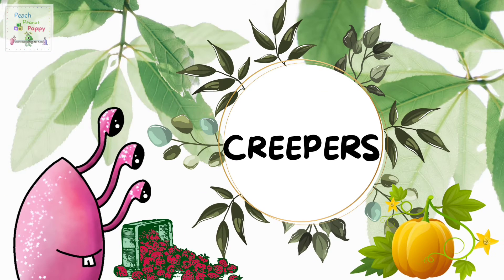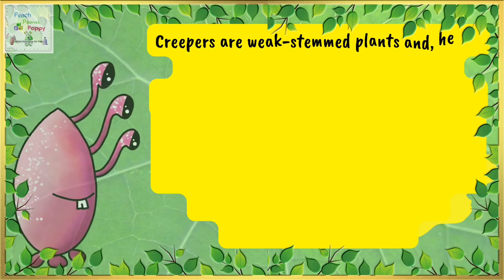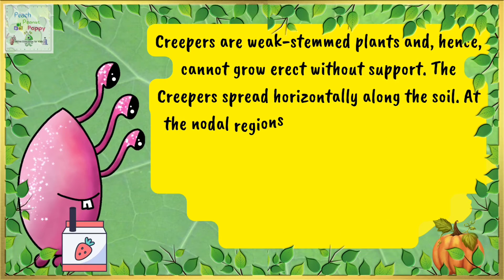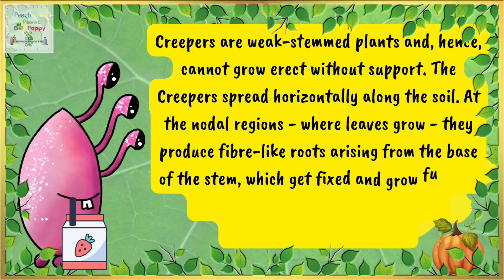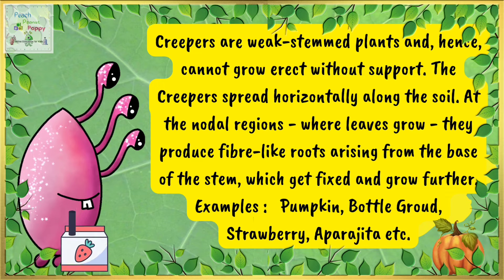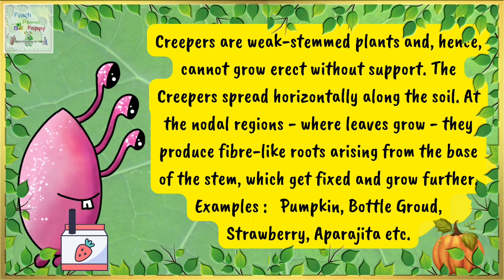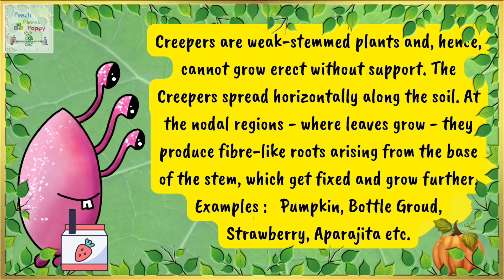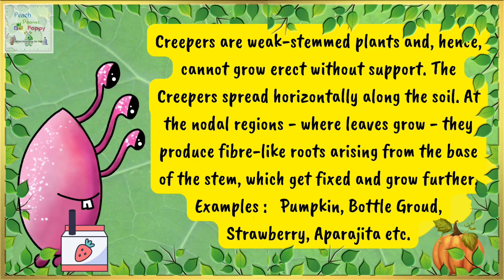Then we have creepers. Creepers are weak stemmed plants and hence they cannot grow erect without support. The creepers spread horizontally along the soil. At the nodal regions where leaves grow, they produce fibre-like roots arising from the base of the stem, which get fixed and grow further. For example, pumpkin, bottle gourd, strawberry, aparajita, etc.